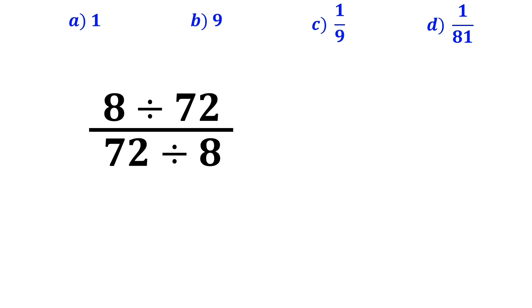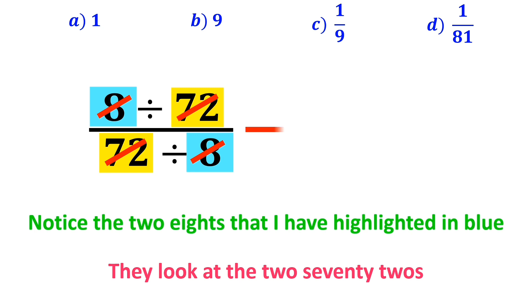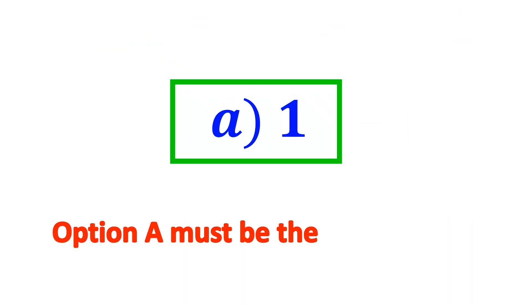Many people when they first look at this expression, notice the two 8's that I've highlighted in blue and immediately assume they cancel each other out. Then they look at the two 72's and assume those cancel out as well. Eventually, they reduce the whole expression to 1 divided by 1, which equals 1. And without thinking twice, they quickly say that option A must be the right answer.